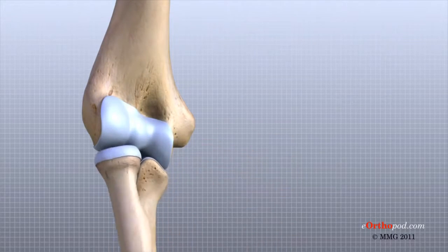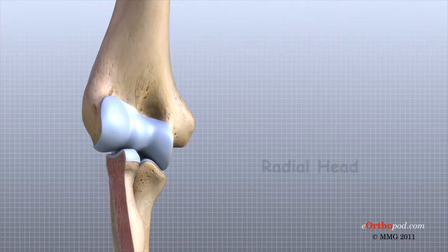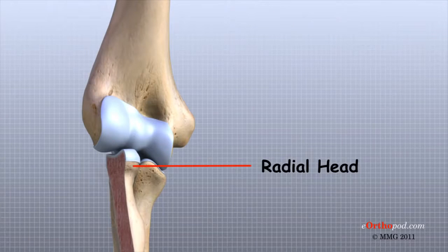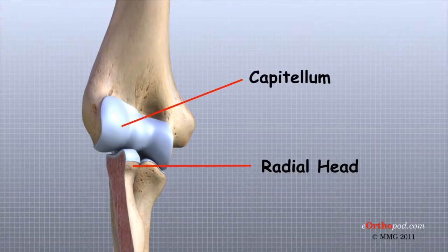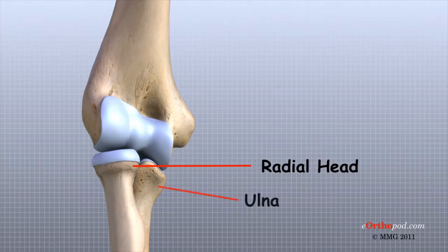To make this motion possible, the radial head is shaped like a smooth knob with a shallow cup at the end. The shallow cup fits against the capitellum, a rounded knob at the end of the humerus that forms part of the elbow joint. The smooth rim of the radial head is also covered with articular cartilage and glides against a small indentation in the ulna.